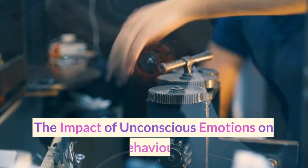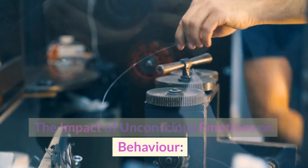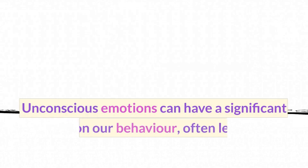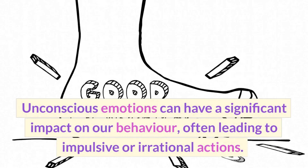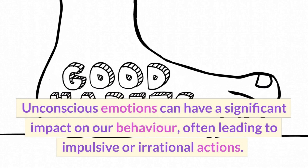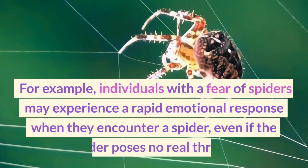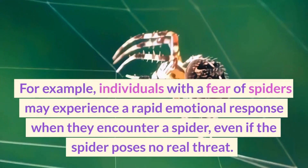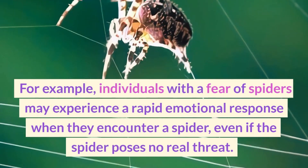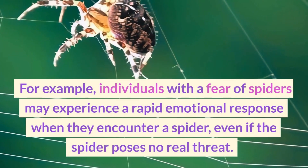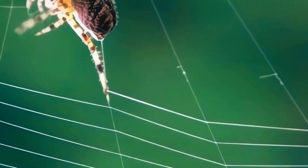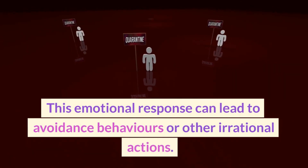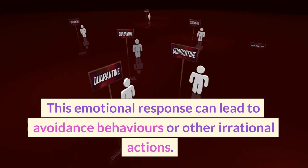The Impact of Unconscious Emotions on Behavior. Unconscious emotions can have a significant impact on our behavior, often leading to impulsive or irrational actions. For example, individuals with a fear of spiders may experience a rapid emotional response when they encounter a spider, even if the spider poses no real threat. This emotional response can lead to avoidance behaviors or other irrational actions.